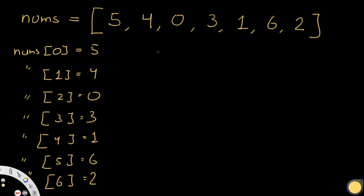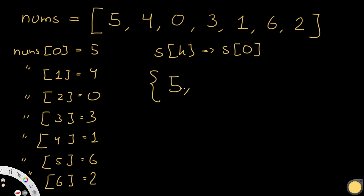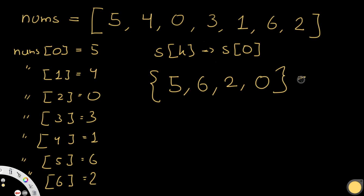Now let's create set S(0). We go to nums[0] which is 5, so the first value is 5. Next we go to index 5 which has the number 6. Then we go to index 6, which is the number 2. Now we go to index 2, which has a value of 0. Then index 0 has a value of 5, but 5 already exists, so we cannot add it again. So our set when k equals 0 is {5, 6, 2, 0}, and this has a length of 4.